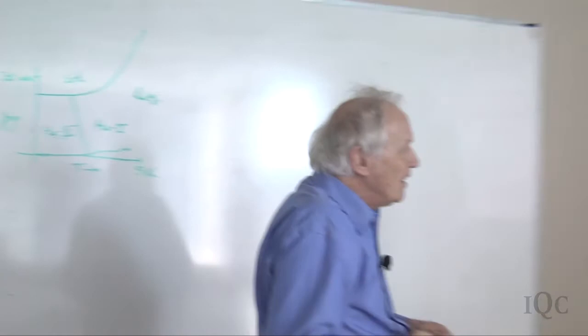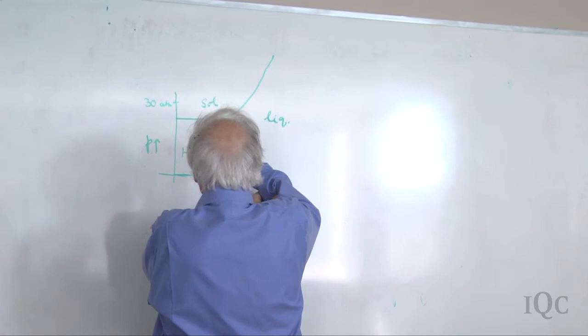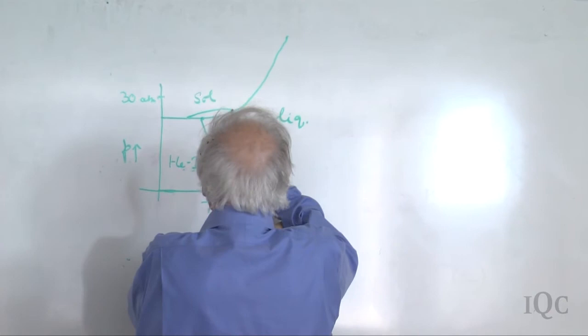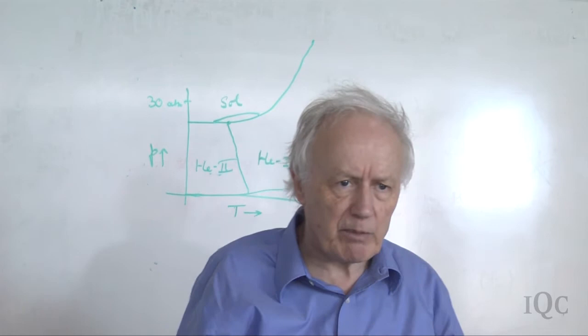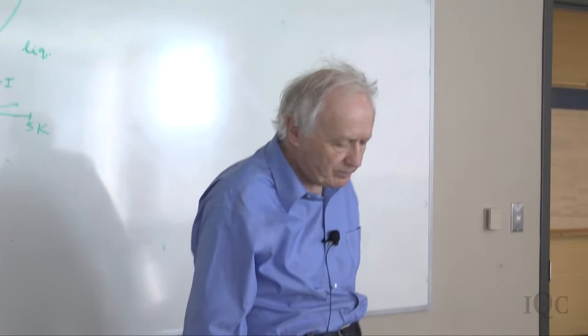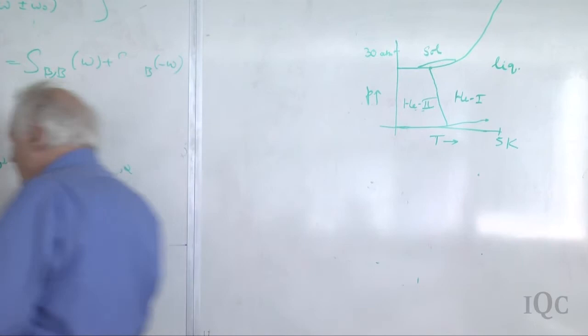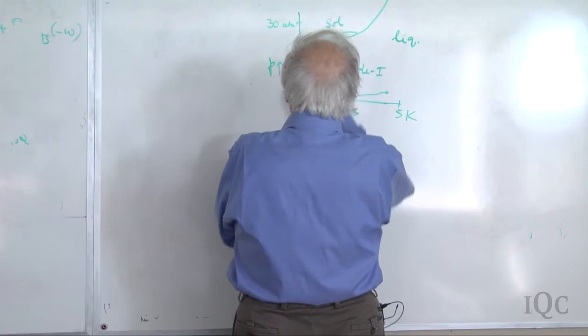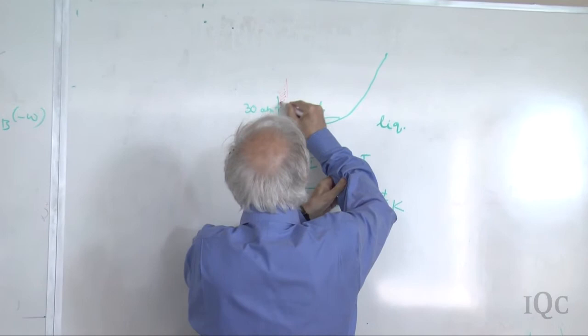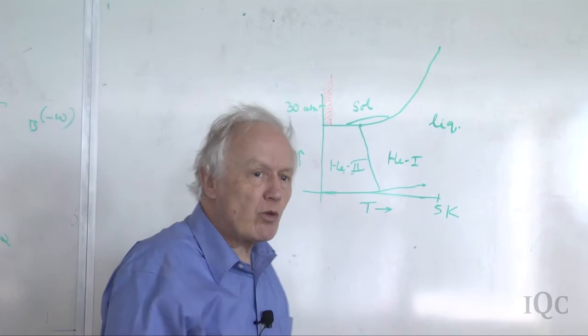The solid is mostly HCP in crystal structure. There is a small sliver of BCC up at higher temperatures, but I'll treat the solid as always being HCP. The phenomena we're going to be talking about occur in a region below about 2 degrees absolute and at pressures anywhere from the melting curve up to something like 60 atmospheres. This is the region we'll be discussing in this lecture.